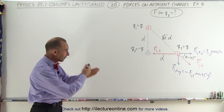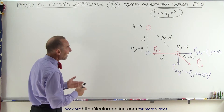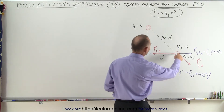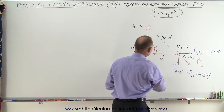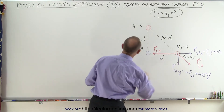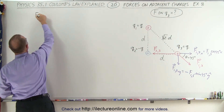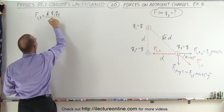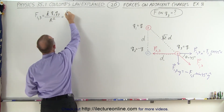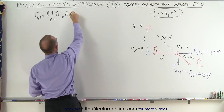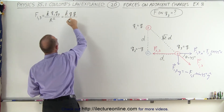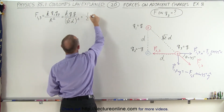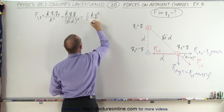We need the components before we can add the vectors together. So next we're going to find the magnitudes of F1,3 and F2,3. They will not be the same because this is a larger distance than here. The magnitude of the force between 1 and 3 is equal to k times q1 times q3 divided by the distance between them squared. In this case, q1 is q, q3 is q, and the distance is the square root of 2 times d, quantity squared. So this equals one half kq² divided by d².